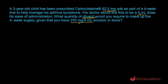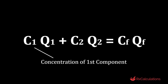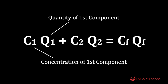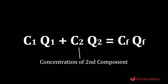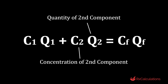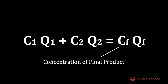Because you are mixing two things — your starting stock solution and the diluent — you have a two-component system. Your equation is: C1·Q1 + C2·Q2 = Cf·Qf. Here, C1 is the concentration of the first component, Q1 is its quantity, C2 is the concentration of the second component, Q2 is its quantity, Cf is the concentration of the final product, and Qf is the quantity of the final product.